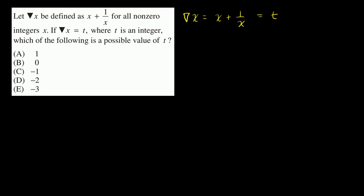So let's think about this a little bit. So what you could try to do is you could take each of these choices and substitute it in for t, and then try to solve for x and see if you can find x's that are integers.